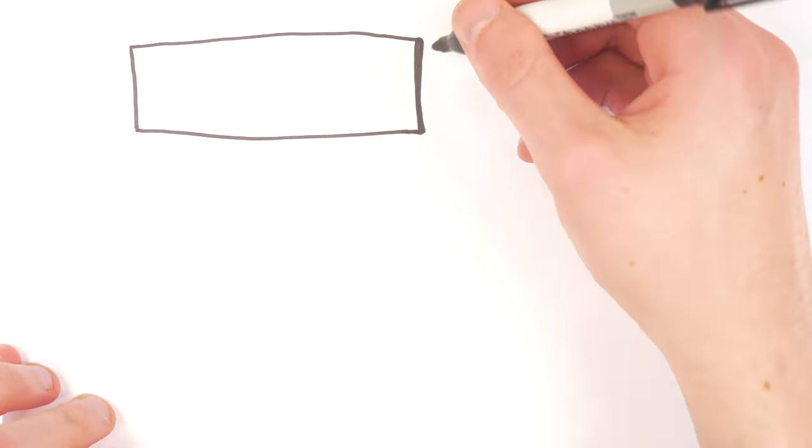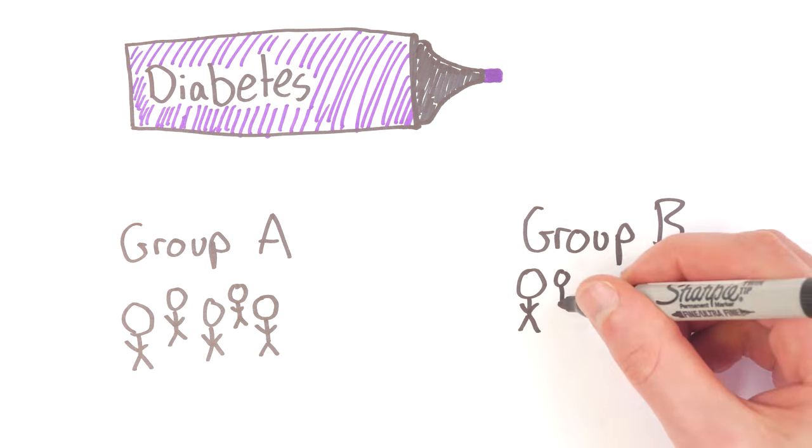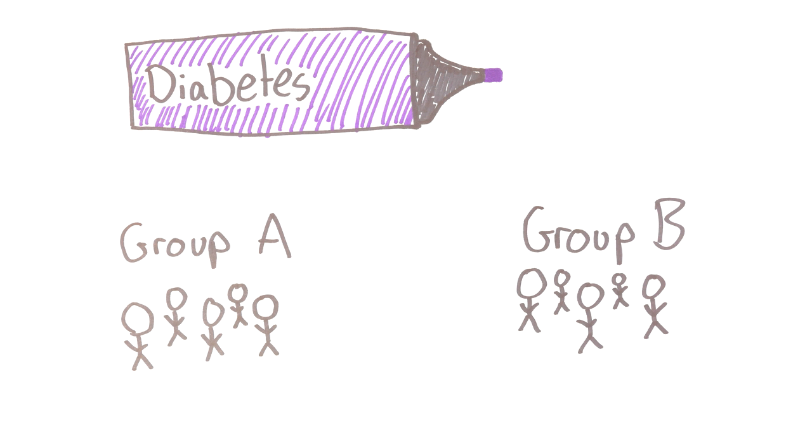Through measuring this biomarker doctors can put patients into groups who might have diabetes and those who do not have diabetes, those who have more highlights versus those who have less.